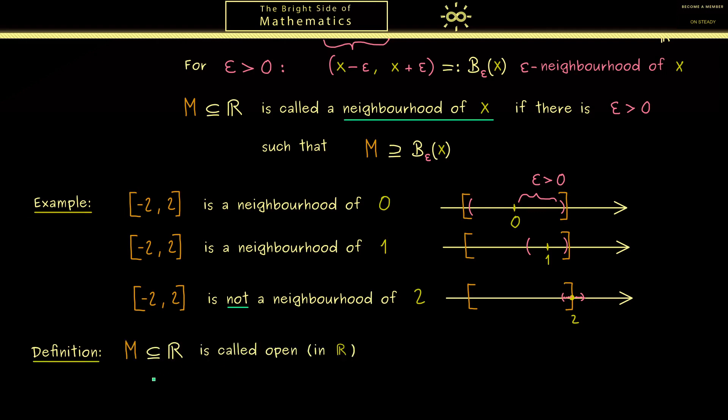Now any subset of the real numbers is called open, or more precisely open in R, if for each point x in M, M is a neighborhood of this point. Hence such boundary points like this one are not in the set M itself. Accordingly for the definition you could avoid the notion neighborhood and just use the epsilon neighborhoods. So this means for all x in M there exists an epsilon greater than 0 such that B epsilon x is a subset of M.